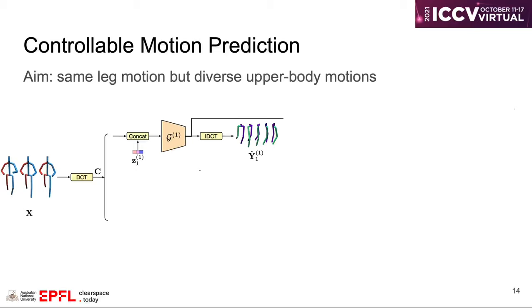To do so, we first divide the pose into two parts, legs and upper-body. The first generator will take a random code Z1 and the history as input to predict future leg motion. The second generator then conditions on such leg motion to predict upper-body motion with another random code Z2.